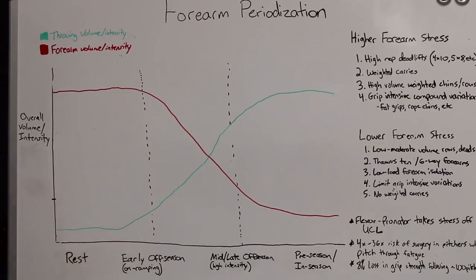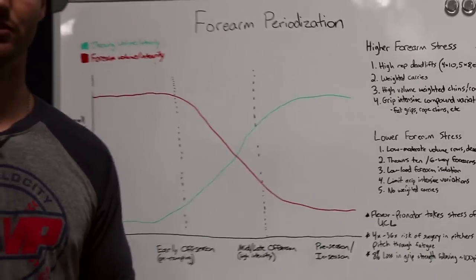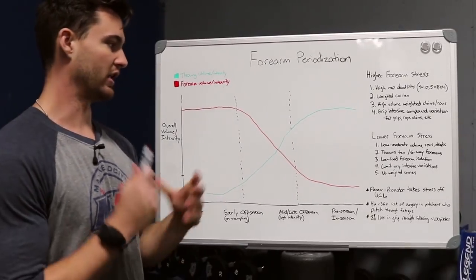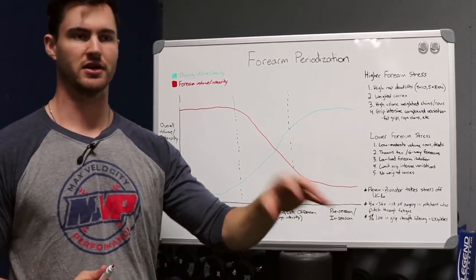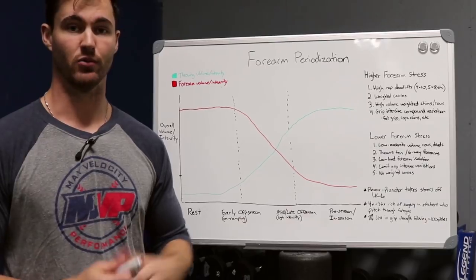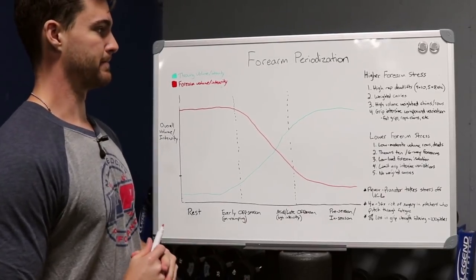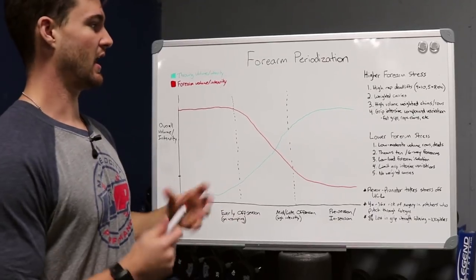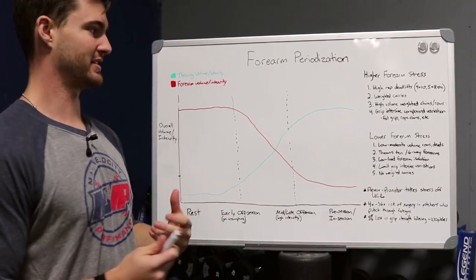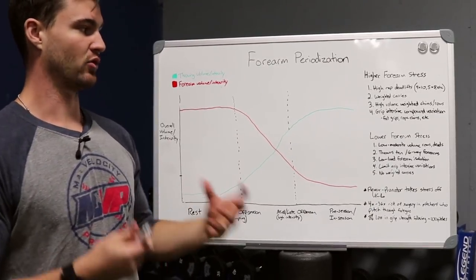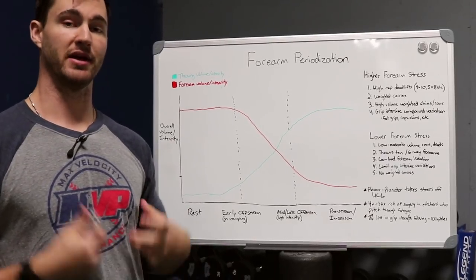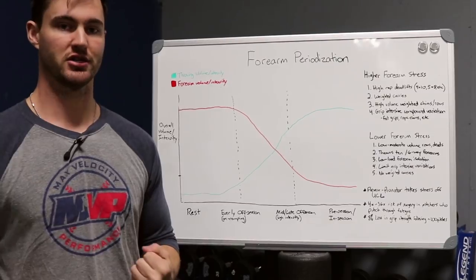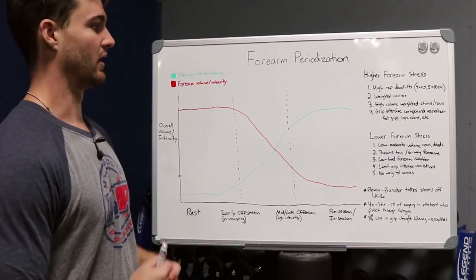So looking at what do I mean by higher stress forearm training? I want to give credit to Dan Blewett, who actually wrote an article on this topic in about 2013 when I worked with him out in Illinois. But just to kind of summarize, higher forearm stress training is things like high rep deadlifts, four by tens, five by eights, anything where by the end of the set your grip starts to be a limiting factor and you really start to crush your forearms.